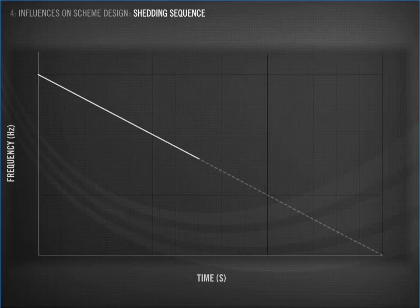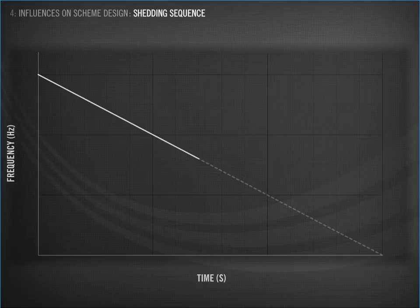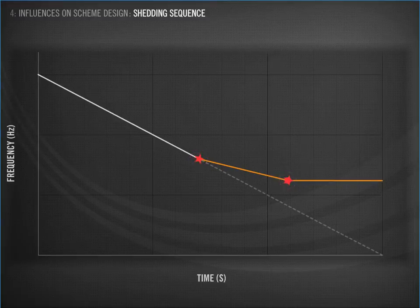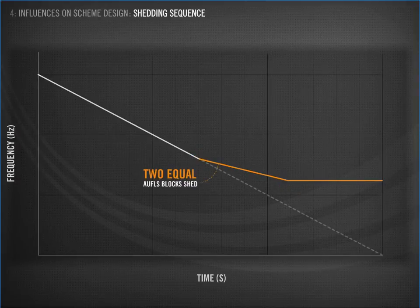In this hypothetical example, we know the total amount of load we need to shed to restore balance to the power system. We divide this into two equal-sized blocks. Block 1 hits the brakes, slowing the frequency decline. It's still falling, so the second block trips. Because exactly the right amount of load was shed, the frequency decline is arrested and the line levels out. We call this the two equal blocks scheme.